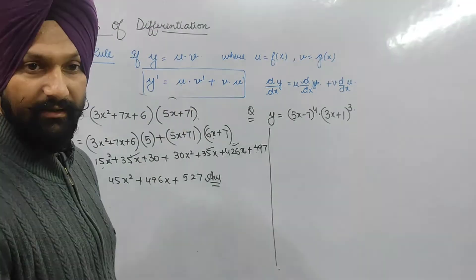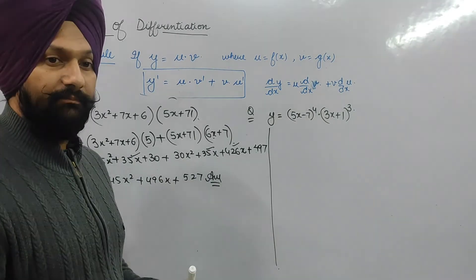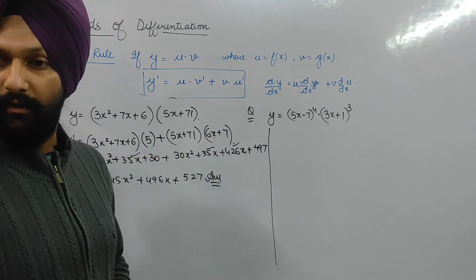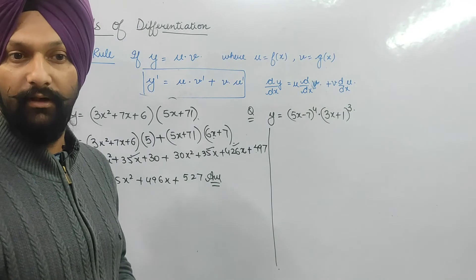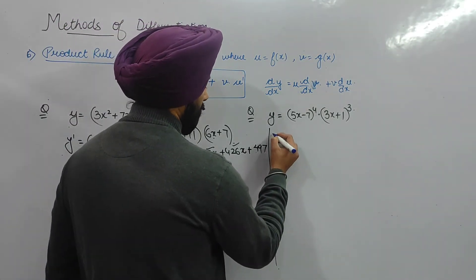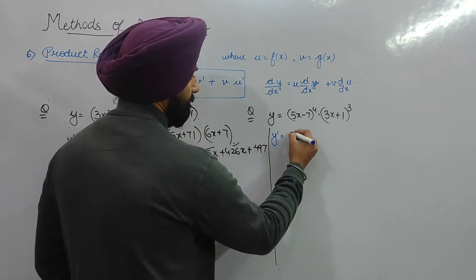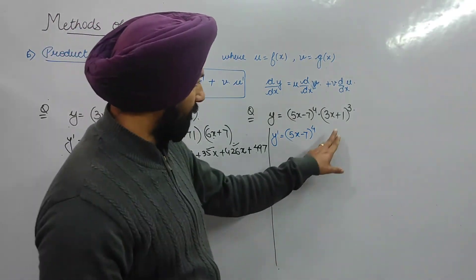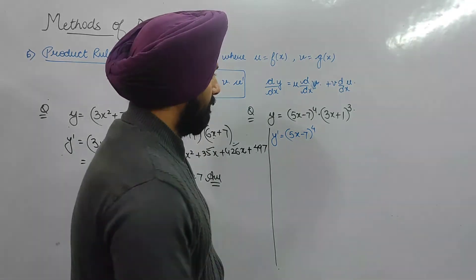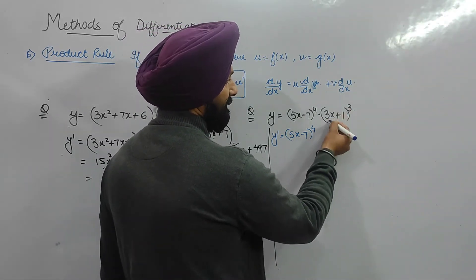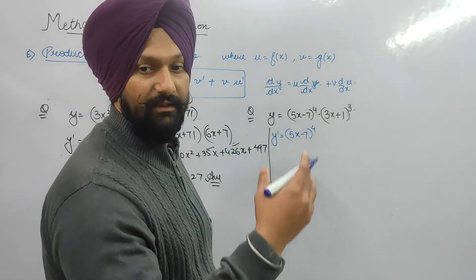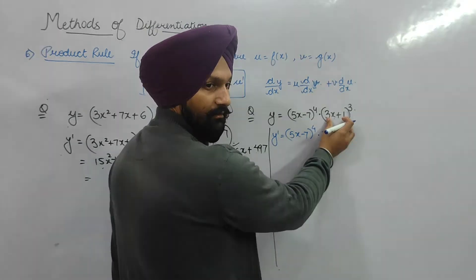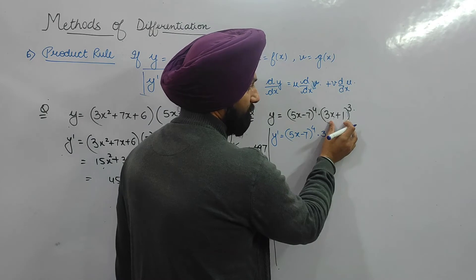Next question: y = (5x − 7)⁴ · (3x + 1)³. Here we specifically need the multiplication theorem — we cannot simply expand first. So y dash equals first function (5x − 7)⁴ into derivative of the second: using the extended power rule, bring down 3, giving 3(3x + 1)² · (ax + b)^(n−1) times the inner derivative.